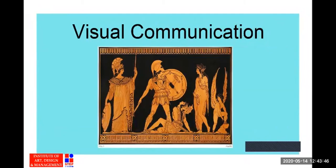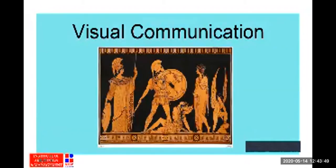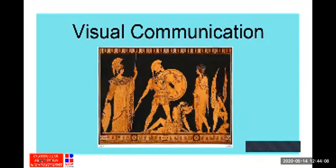Looking further at this painting, we can see visual communication at work — an angel, soldiers, and an emperor are depicted, and these figures communicate stories and hierarchies through the visual composition of the painting.